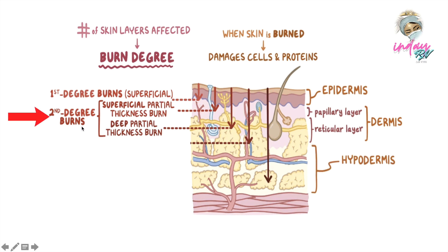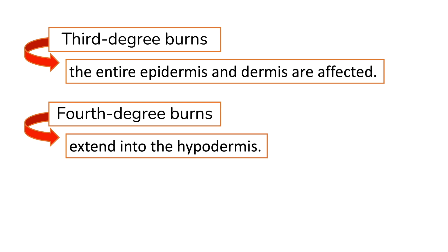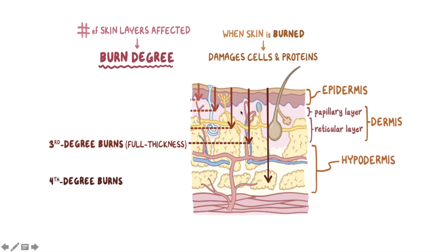To clarify: second degree superficial partial thickness burns involve the papillary layer only, while deep partial thickness burns reach the reticular layer. In third degree or full thickness burns, the entire epidermis and dermis are affected. In fourth degree burns, the burn extends into the hypodermis. Always remember that when the skin is burned, the cells and proteins are damaged.